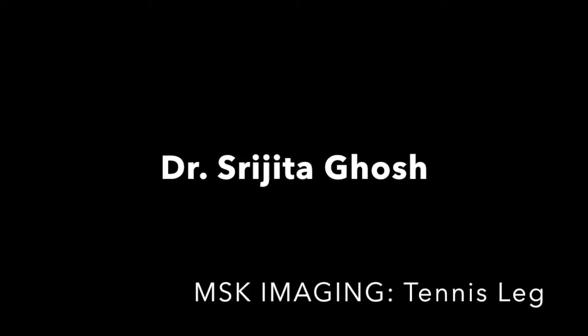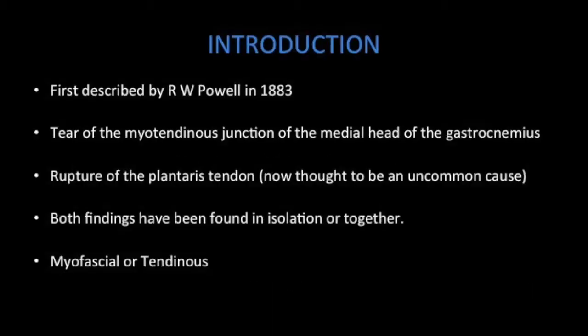Tennis leg is a specific kind of calf injury mostly related to sports. It was described by Powell a long time back, around 1883. It typically involves a tear of the myotendinous junction of the medial head of gastrocnemius or the plantarus. Both findings may be found in isolation or together, and they may be either myofascial or tendinous.